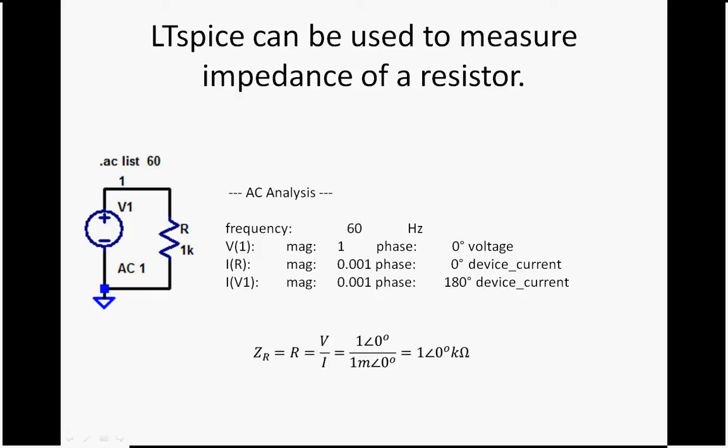We have the voltage. We have the magnitude of the current, and it's zero and zero phase. The current of the voltage source is, of course, 180 degrees out of phase because that's the definition of a power source.